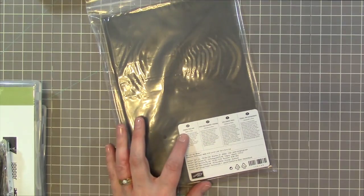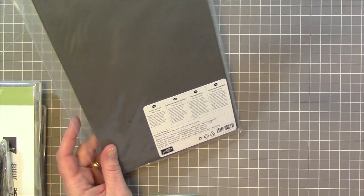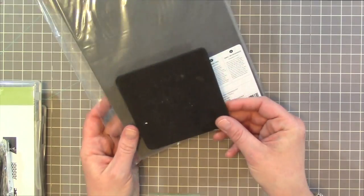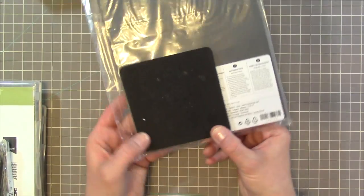I got the Stampin' Pierce mat. This is the larger one. This measures nine and a half by six and a half compared to my original one which is just this little tiny square. So it was good to get that. I got some other stamp sets.